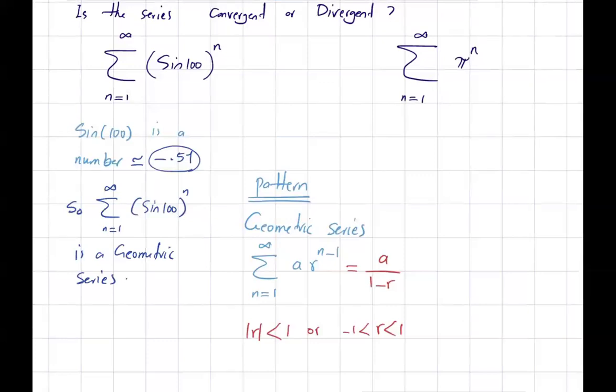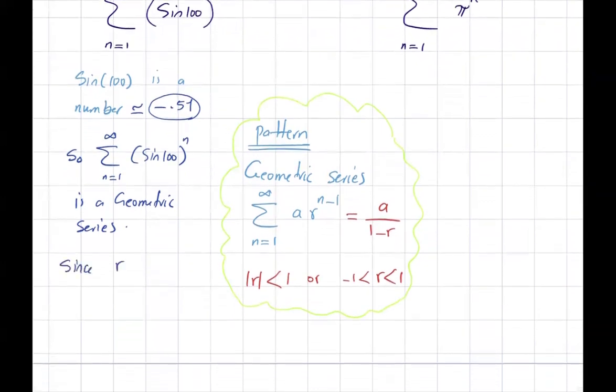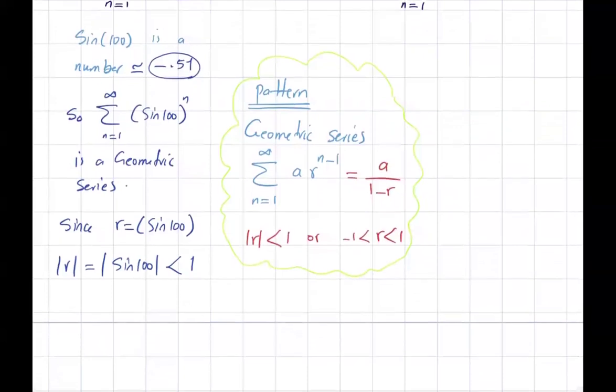So what is the ratio here? If you look at the ratio, the ratio is sine of 100. So since r equals sine of 100 and absolute value of r, which is absolute value of sine of 100, is less than 1, the series is convergent.